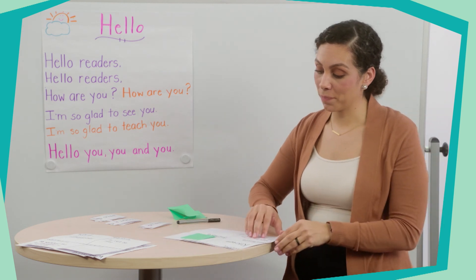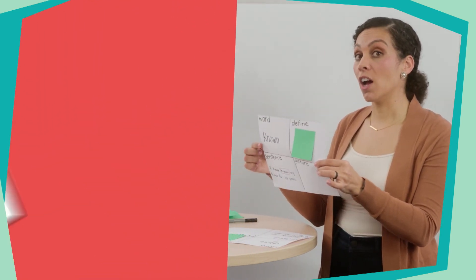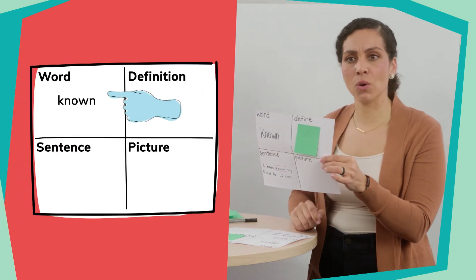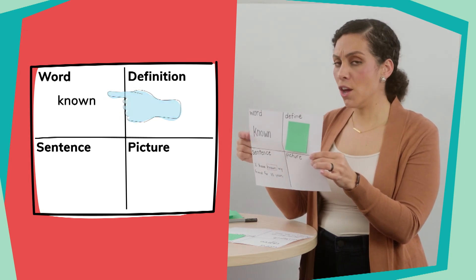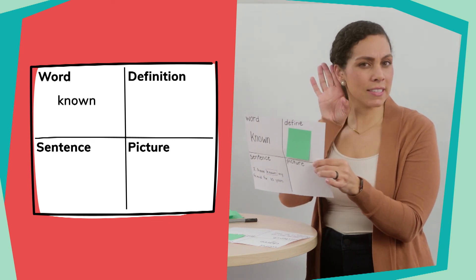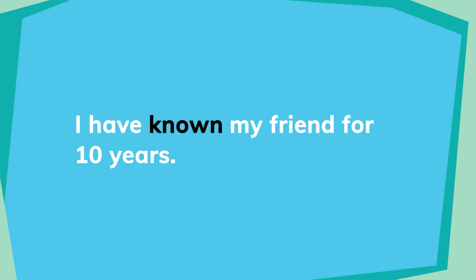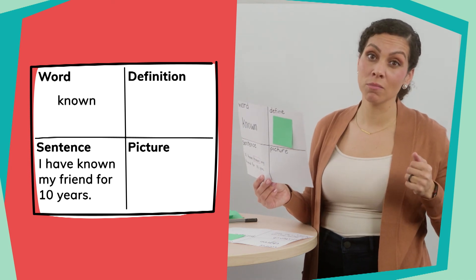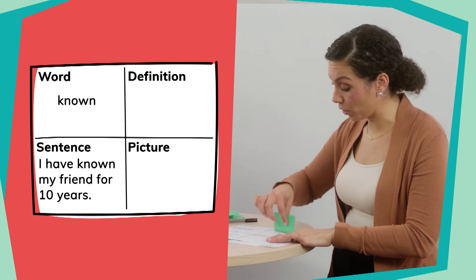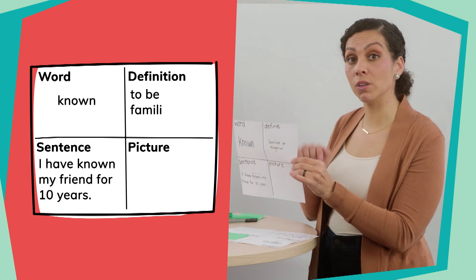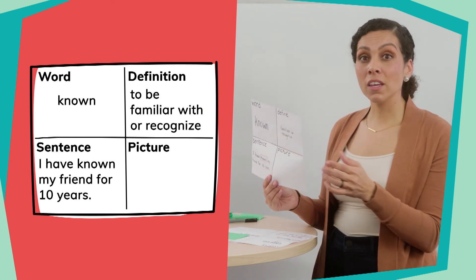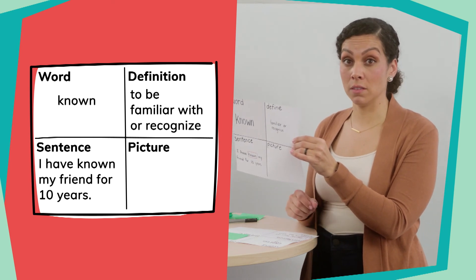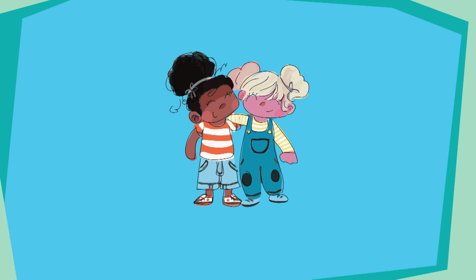Our next word is the word 'known.' Go ahead and write that down in the upper left-hand corner of your Frayer model. Listen to me read the sentence and see what you think it means: I have known my friend for 10 years. Copy that down and think about what the word known means. I've known them for 10 years, so that means I must be familiar with them or recognize them. So 'known' means to be familiar with or recognize. I could draw two friends to help remember, because they've known each other for a long time.